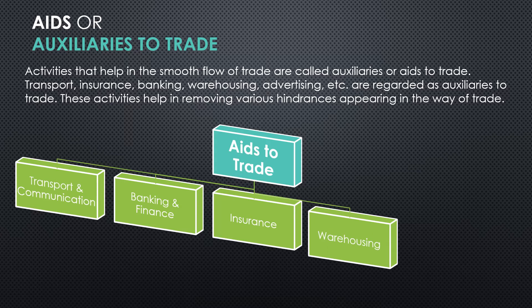The next aid is warehousing. Usually there is a time gap between the production and the consumption of goods — goods are not consumed immediately after they are produced. For example, wheat and rice are produced in a particular season but consumed throughout the year. So it is very important that these goods are stored properly so that they are available throughout the year. This problem is taken care of by warehousing — warehouses are constructed keeping in mind the nature of goods and facilitate availability whenever required.